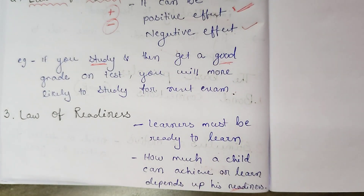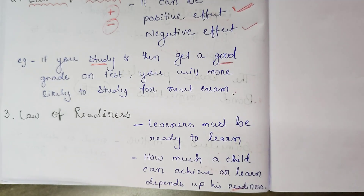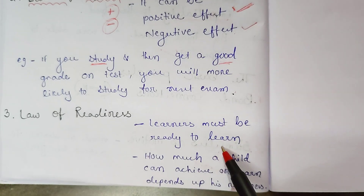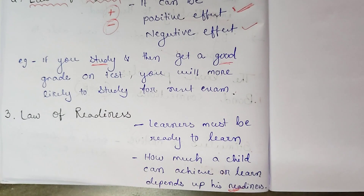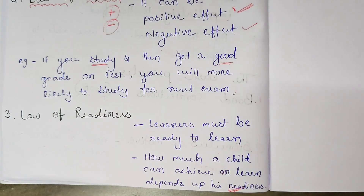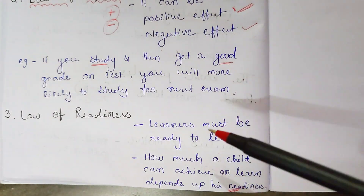The third law is the Law of Readiness. This is very important. Every learner needs to be ready — physically, mentally, and emotionally — before learning can take place. Learners must be ready to learn. How much a child can achieve and learn depends on their readiness. If asked what the major laws of Thorndike are, write: Law of Exercise, Law of Effect, and Law of Readiness.